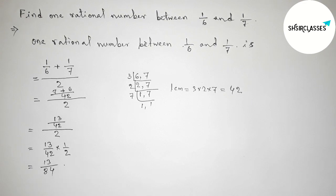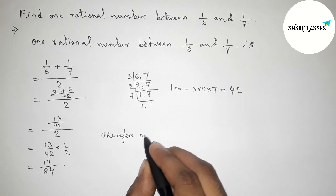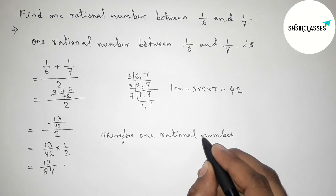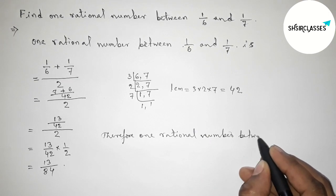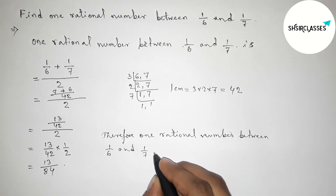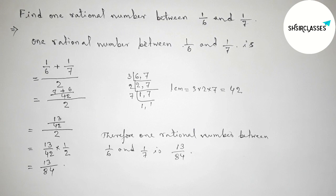So 13/84 is one rational number between 1/6 and 1/7. Therefore, one rational number between 1/6 and 1/7 is 13/84.